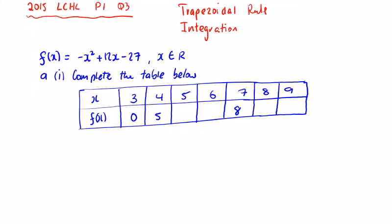2015 Leaving Cert Higher Level Paper 1 Question 3 is about filling in a table, the trapezoidal rule, and integration. You're given f(x) equals minus x squared plus 12x minus 27, and you're asked to complete the table below. You're given three values already: 0, 5, and 8 for x values 3, 4, and 7.